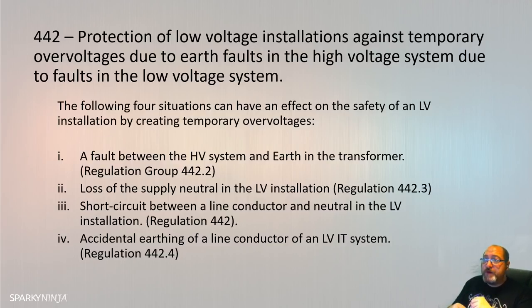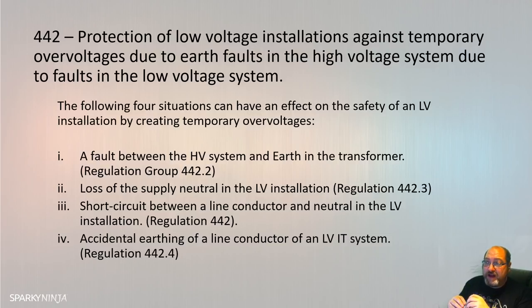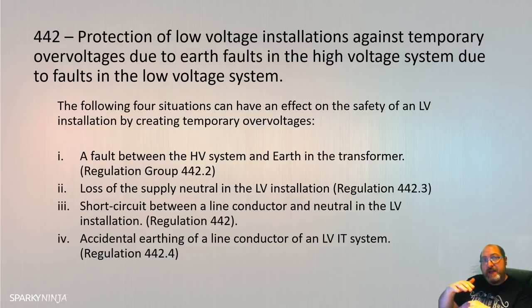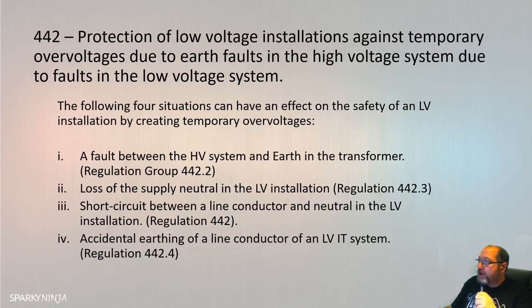The following four situations can have an effect on the safety of the low voltage system by creating temporary overvoltages. It could be a fault between the high voltage system and earth within the transformer; it could be a loss of the supply neutral in the LV system — I've seen that happen a few times. There's also a fault between the line conductor and neutral in the LV installation, and in IT systems with their deliberate high impedance between earth and the rest of the system, shorting that out will incur high voltages.